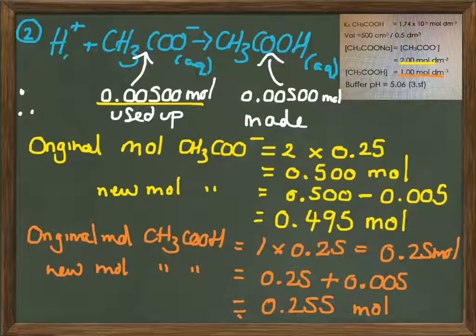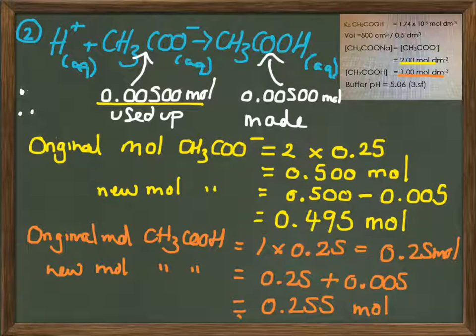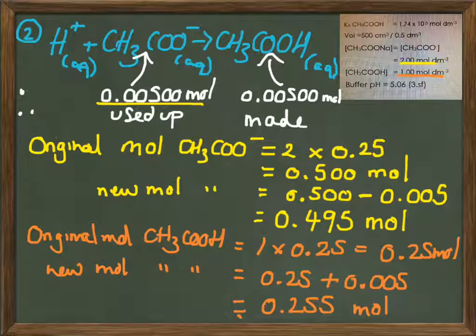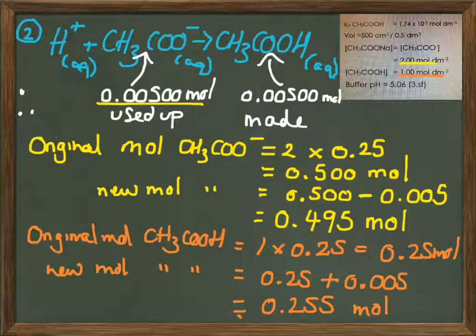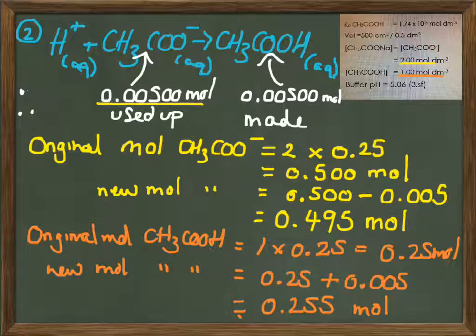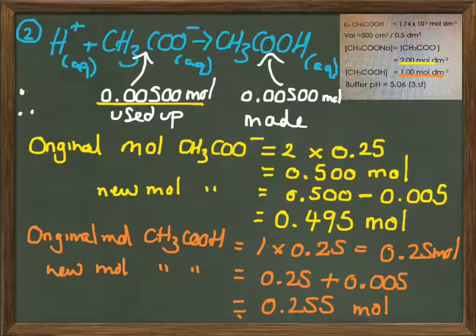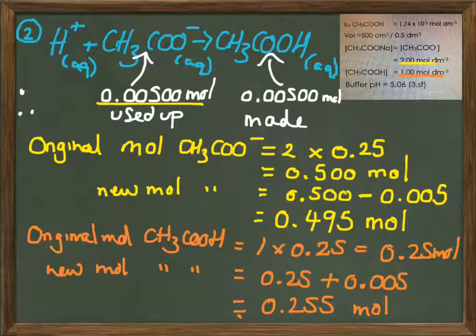Similarly, we had an original number of moles of our weak acid in our buffer solution. We multiply the concentration of our weak acid by the volume, 0.25 decimetres cubed, giving us 0.25 moles of weak acid. We're going to add another 0.005 moles of ethanoic acid to this, giving us our new moles of weak acid of 0.255 moles. There's our new moles of both our salt, our ethanoate ion, and our weak acid.